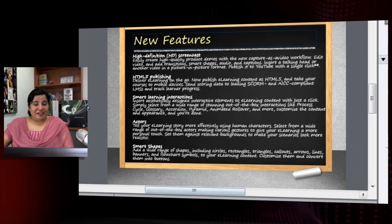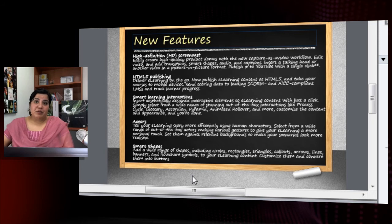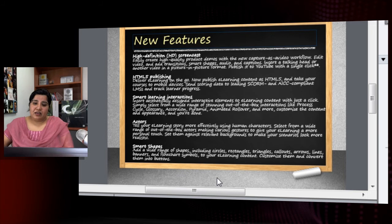Having a content-heavy screen in an e-learning course is a complete no-no. You should actually ban screens like this in your e-learning courses completely. So what do I do when I have screens like these where I have some information which is critical and related? Here I'm talking about new features and I want to talk about all of them on one screen, but if I put all the information here I really disappoint my student.